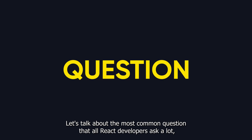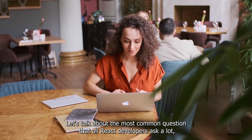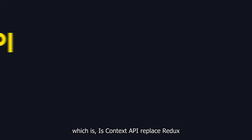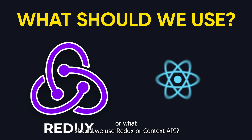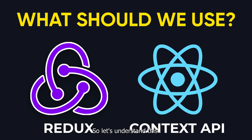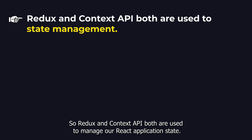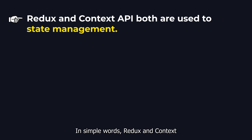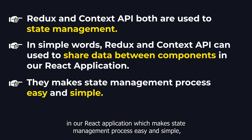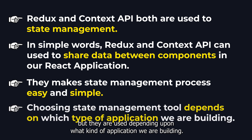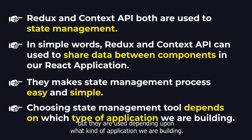Let's talk about the most common question that all React developers ask: does Context API replace Redux, or what should we use — Redux or Context API? Redux and Context API are both used to manage our React application state. In simple words, both can be used to share data between components in our React application, which makes the state management process easy and simple, but they are used depending upon what kind of application we are building.